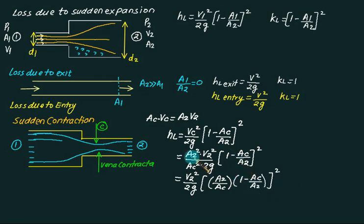We are not disturbing this term but we are including this term inside. Multiply and solve it further. What do you get HL equal to? V2 square divided by 2g inside, is it A2 by AC and is it minus 1 now and this term is more simplified now.